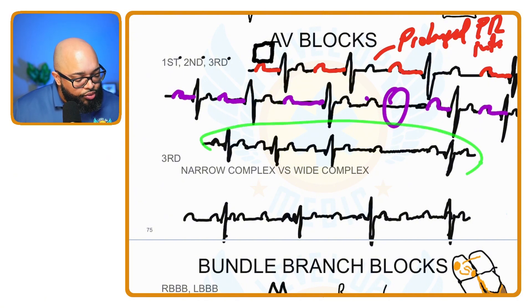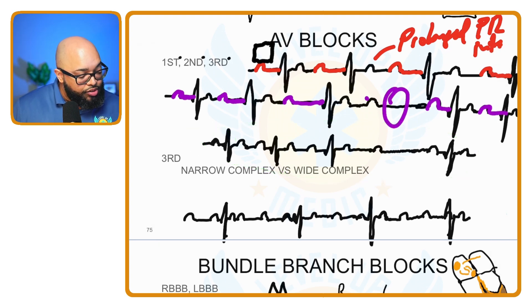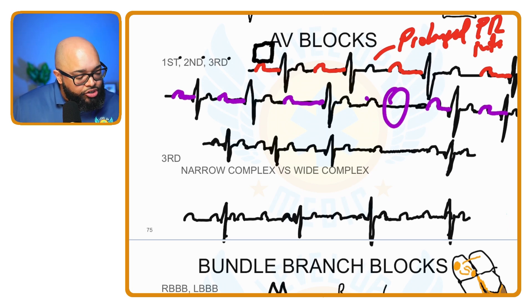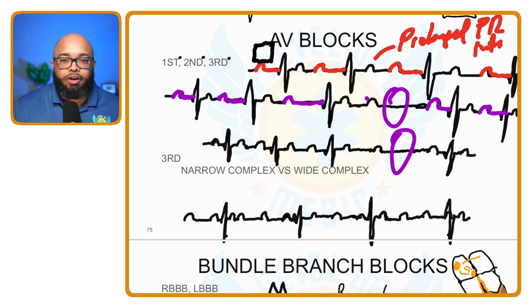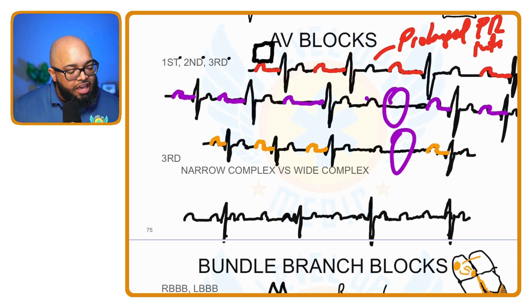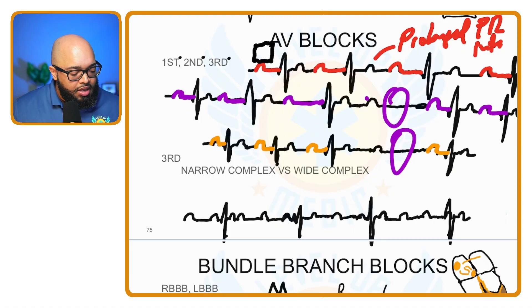Now let's look at second degree type two. We have P, QRST — P, QRST — P, QRST — P, and then a dropped beat — then P, QRST. Looking at the PR intervals of each beat: first beat, second beat, third beat — then the dropped beat — then the next beat. If I compare all the PR intervals, they're staying the same — it's a constant PR interval with a dropped beat.